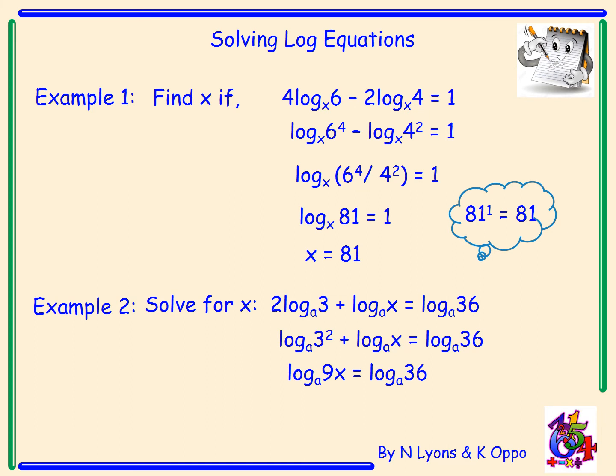So 3² × x = 9x, giving us log 9x (base a) = log 36 (base a). Because there are logs on both sides with the same base, we can cancel them off. We now have 9x = 36. Nine times what equals 36? Nine times 4 is 36, so x = 4.